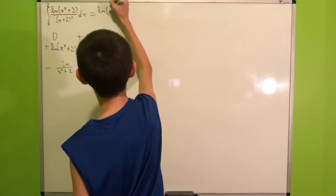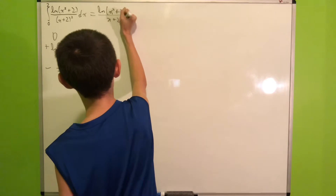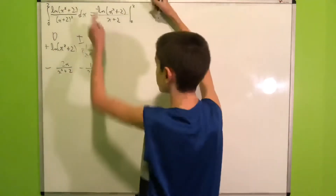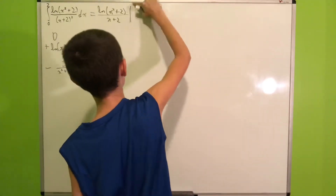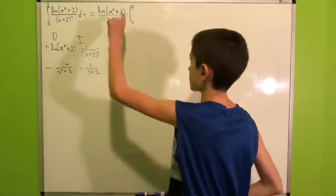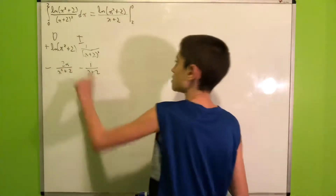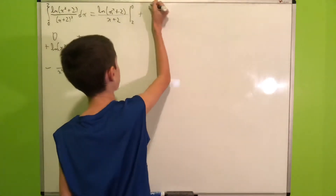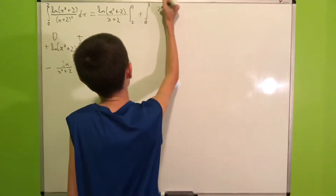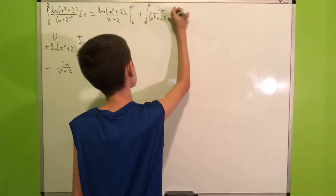So we get ln(x² + 2) over (x + 2), but then we're supposed to have a minus and we evaluate this from 0 to 2. We can use the negative sign to interchange the two bounds at which we are evaluating. So because of the minus sign, instead of evaluating at 0 and 2, we evaluate at 2 and 0 — and minus minus is plus — so we get plus the integral from 0 to 2 of 2x all over (x² + 2)(x + 2).